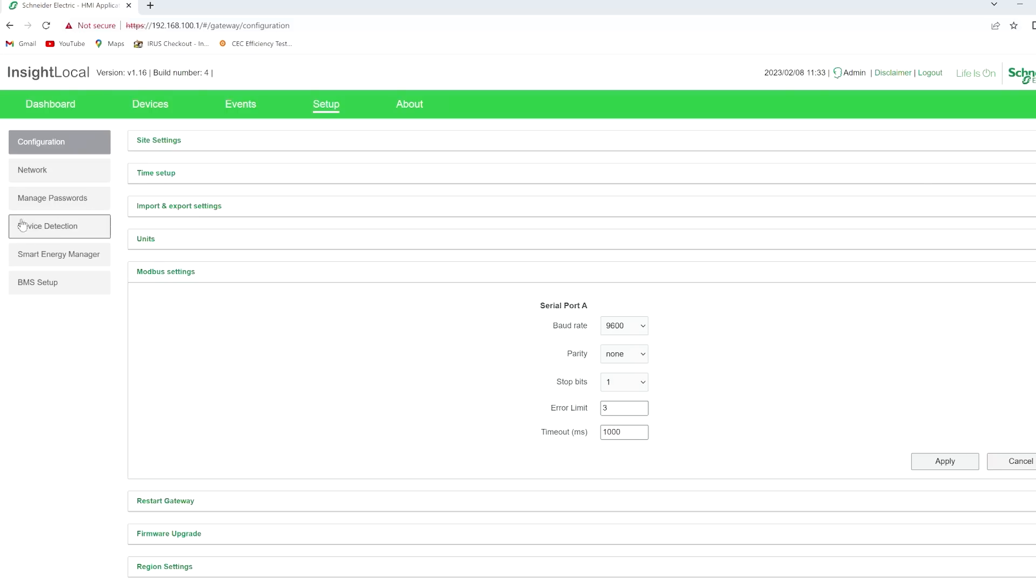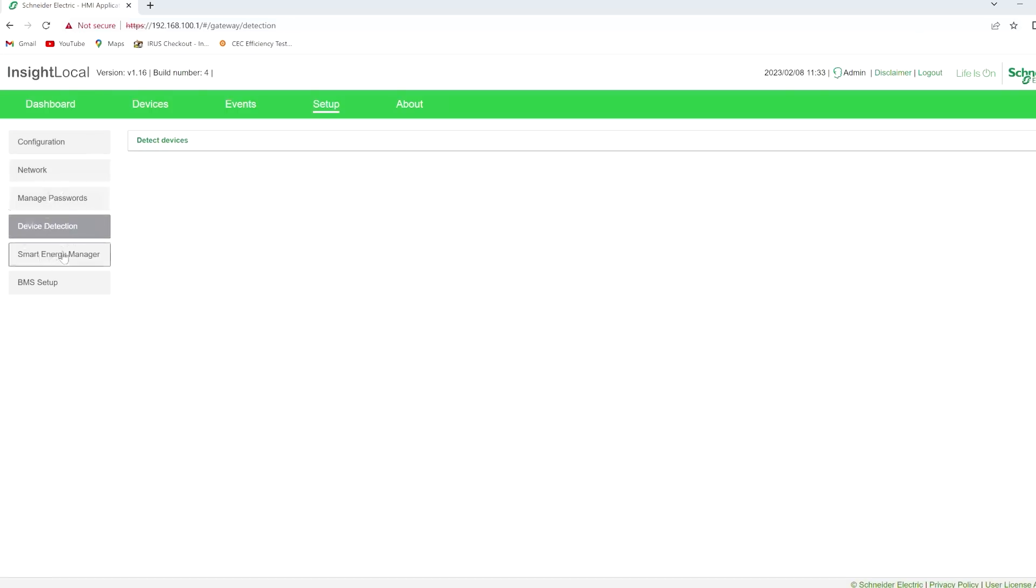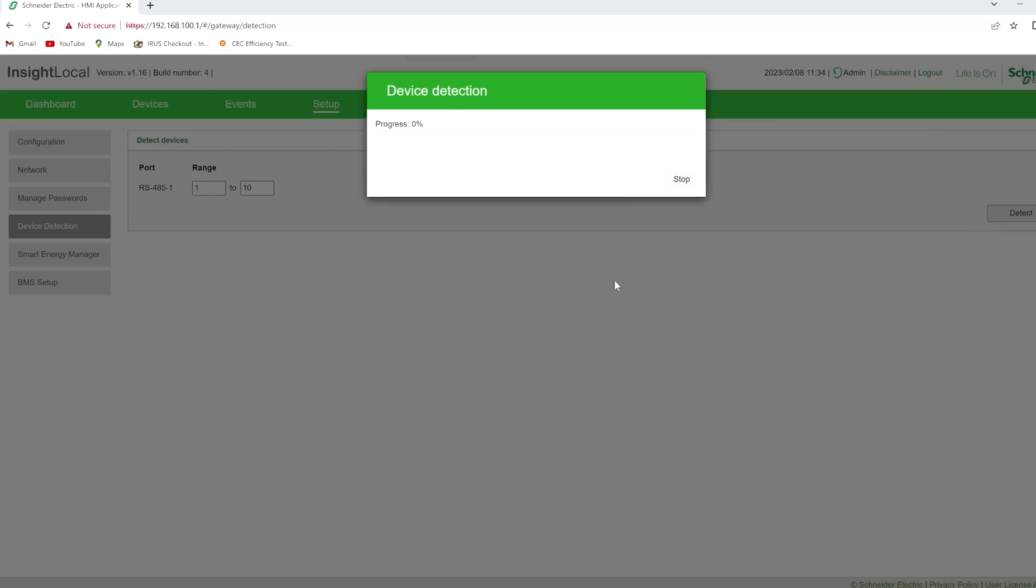Next we'll click setup in the upper right. Modbus settings. We're at 9600, so that's correct. That's good. And we'll click device detection. So next we go to device detection. Range 1 and 10. And detect. And it's not moving right now, but hopefully it finds the BMS. So we just have to wait and see if it finds it.